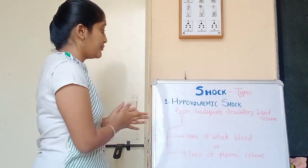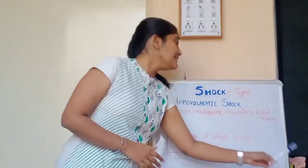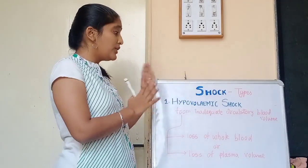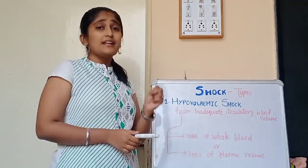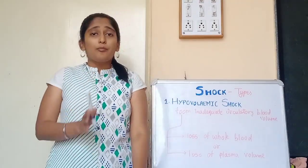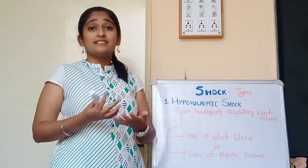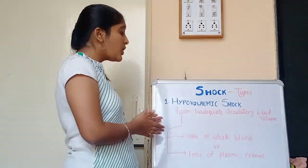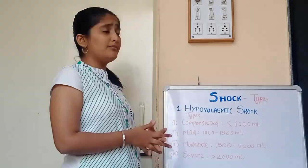Hypovolemic shock results from inadequate circulatory blood volume — when there is no proper blood flow in the body. The loss may be of two types: loss of whole blood, such as due to hemorrhage from an accident, or loss of plasma volume alone.